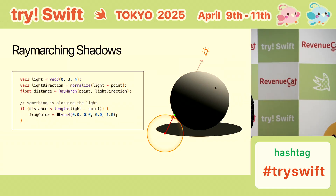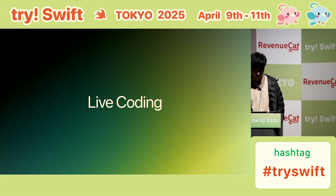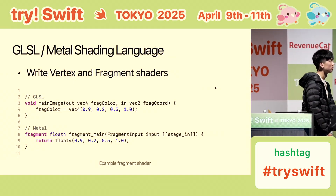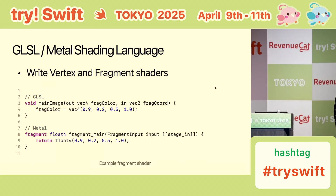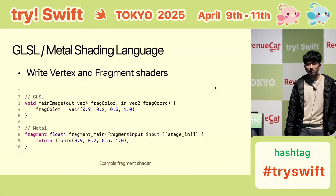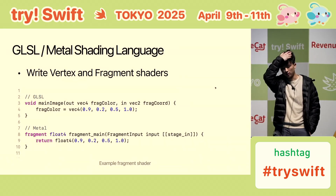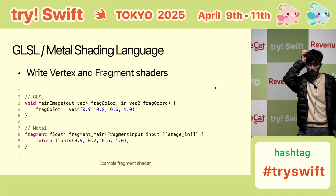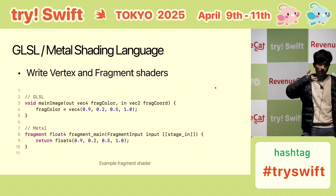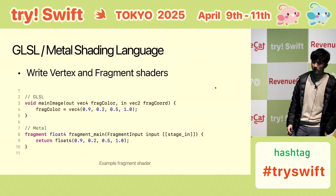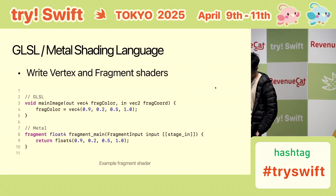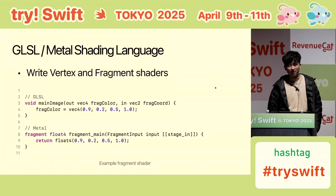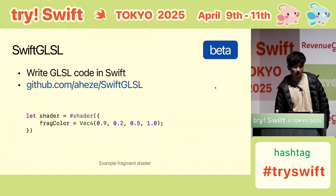Okay, let's do some live coding. Just a recap: usually you write shaders with Metal or GLSL — they're basically the same thing. In GLSL it's vec4, in Metal it's float4 — essentially the same. But that syntax is kind of complicated, so instead we're going to use Swift. Now we can write shaders as Swift — this is in beta, I'll upload the code later today. As you can see, it's much more familiar syntax.